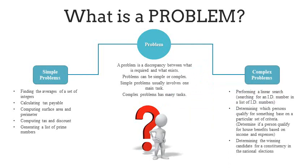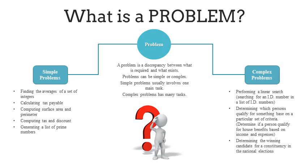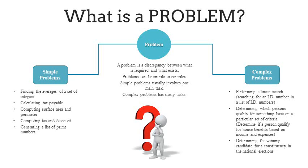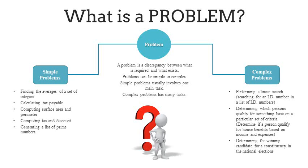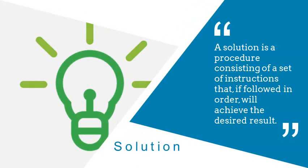More complex problems include performing a linear search — for example, searching for an ID number in a list of ID numbers where you have many entries to sort through. You may also want to determine which person qualifies for something based on particular criteria, such as house benefits based on income and expenses, or determining the winning candidate for a constituency in national elections. These problems require many tasks to complete.